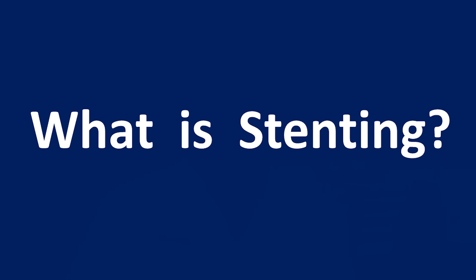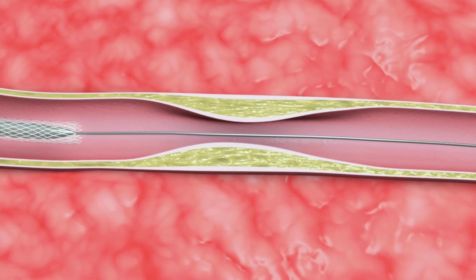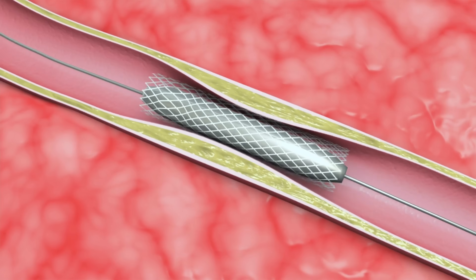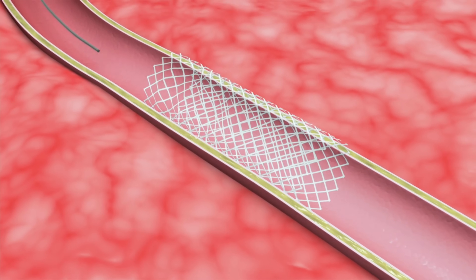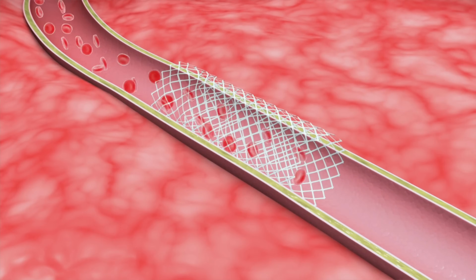What is stenting? Stenting, also known as percutaneous coronary intervention, abbreviated as PCI, is a procedure that uses a flexible plastic catheter — which is a thin tube — to dilate the narrowed arteries in the heart. A metal stent, which is a metal scaffolding, is then placed at the site of the major blockage to hold the artery open. In this way, stenting helps to restore and preserve blood flow to the heart muscle.